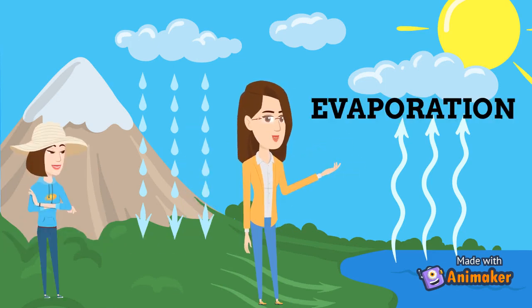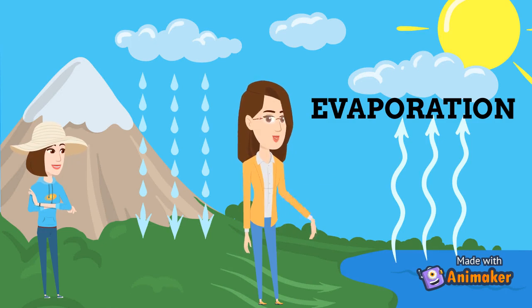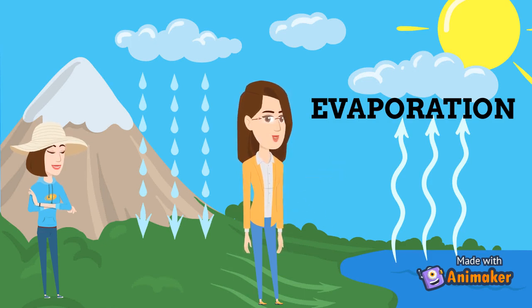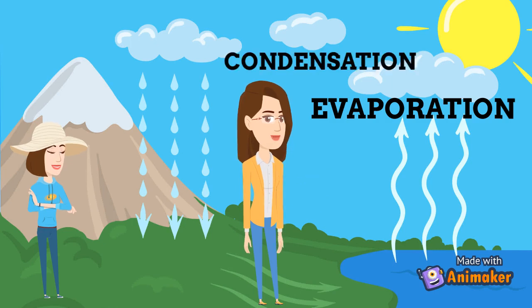As the water vapor rises higher and higher, the cool air of the atmosphere cools down the water vapor into liquid. And if it changes into a cloud, the changing of water vapor into liquid and forming a cloud is known as condensation.